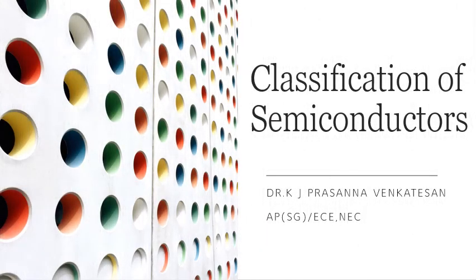Hello students. In the previous lecture we have discussed about the atomic structure, energy band structure of different types of solids like metal, semiconductor and insulator, and how the energy band differs between these materials. In today's video lecture, we are going to discuss about the classification of semiconductors.